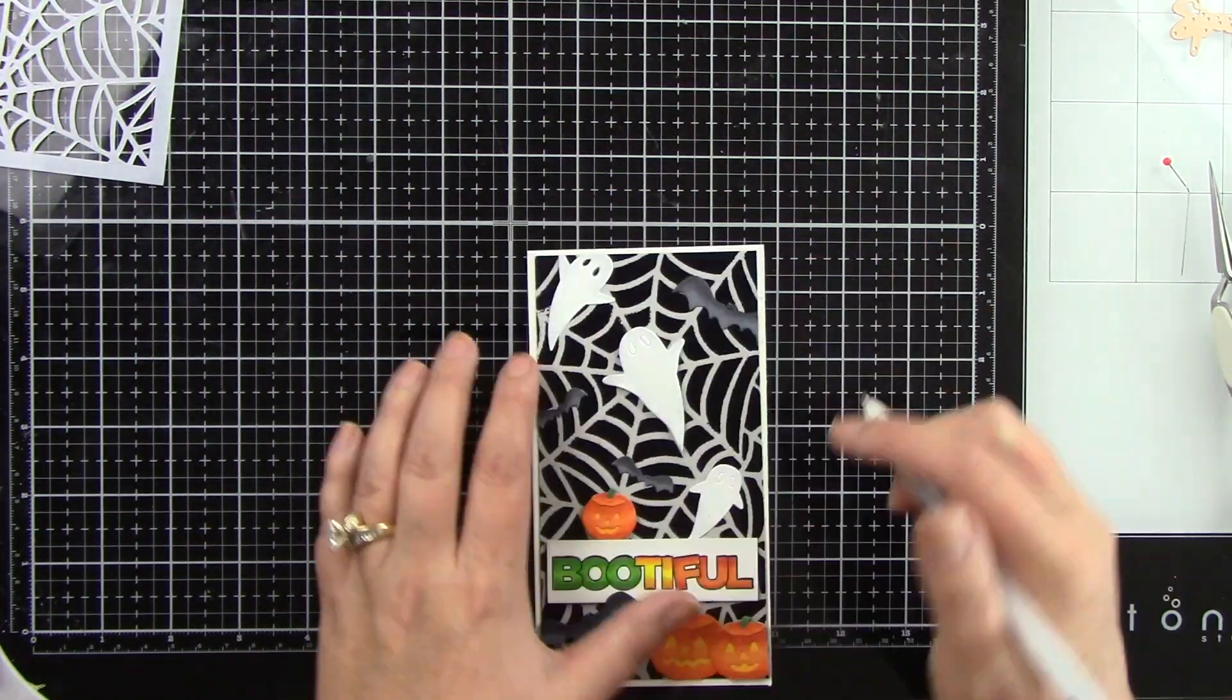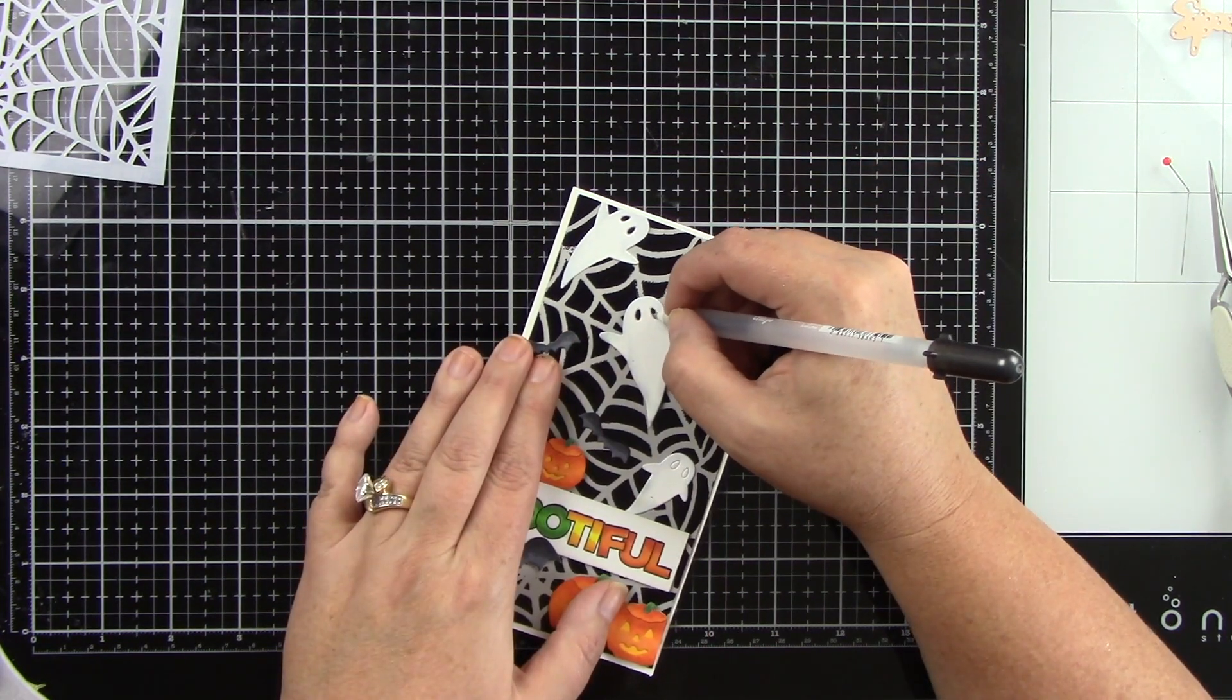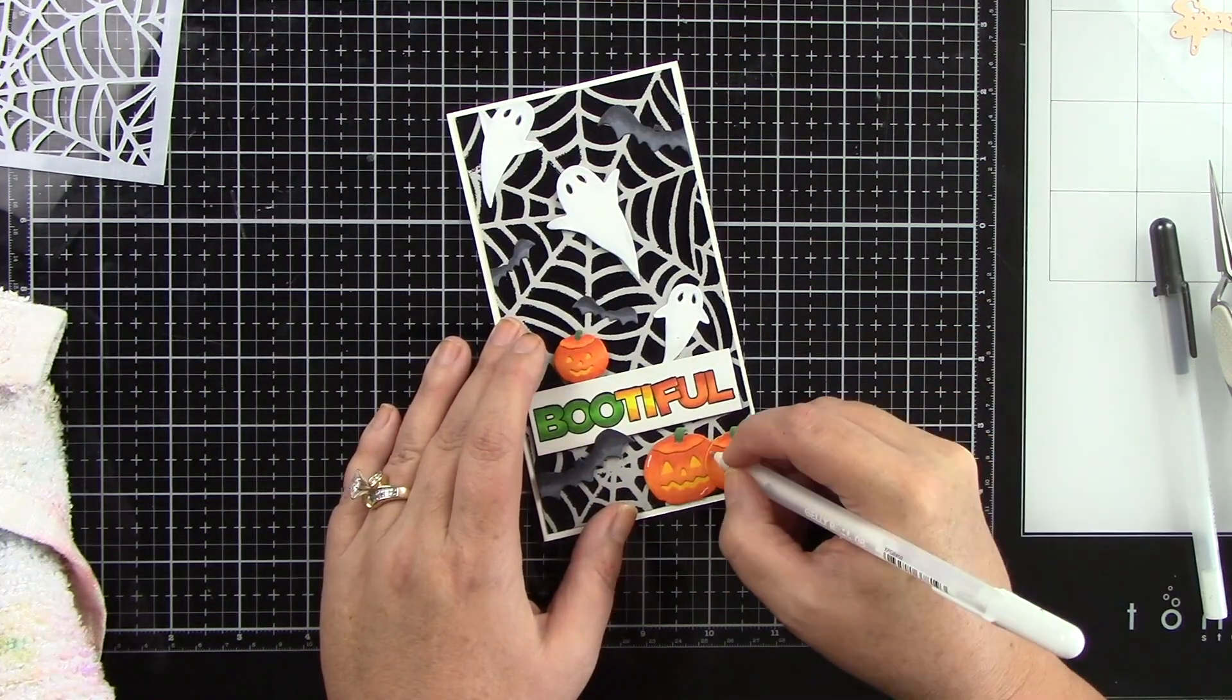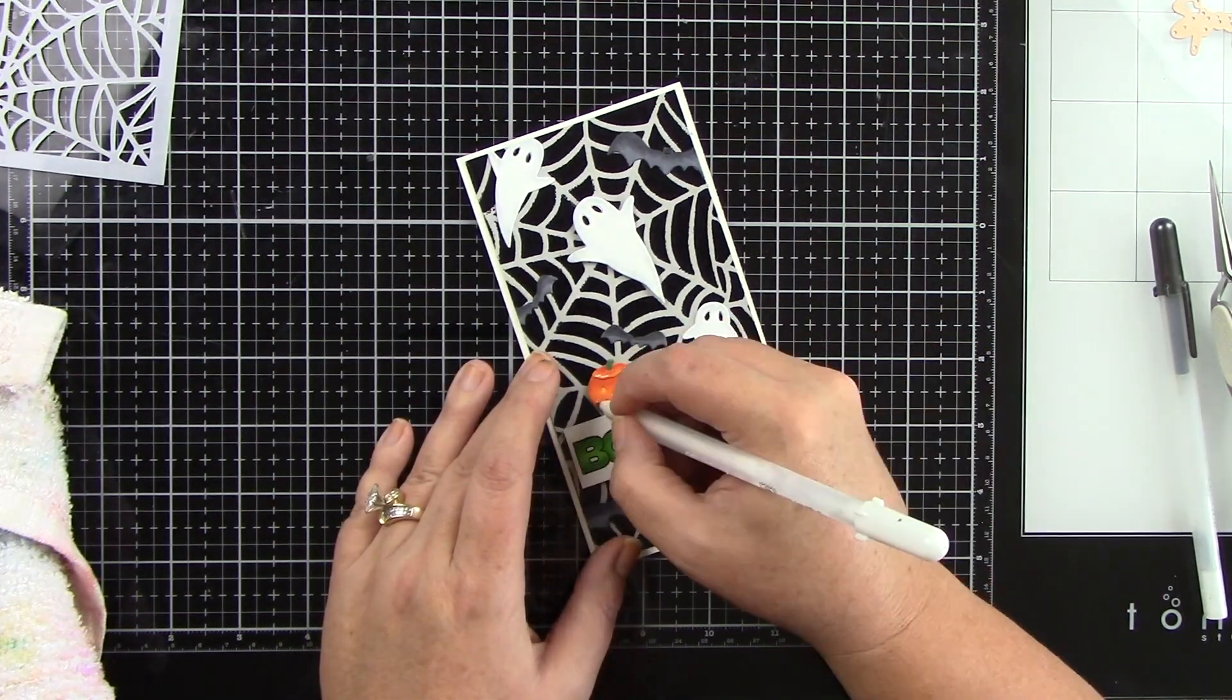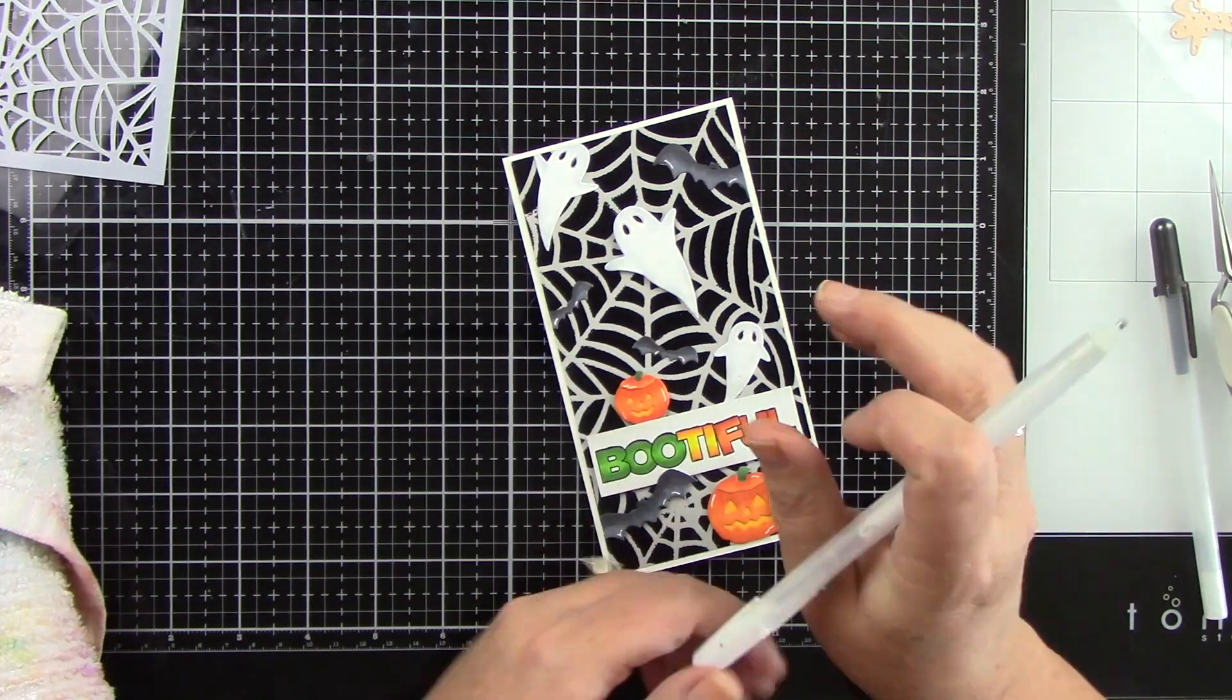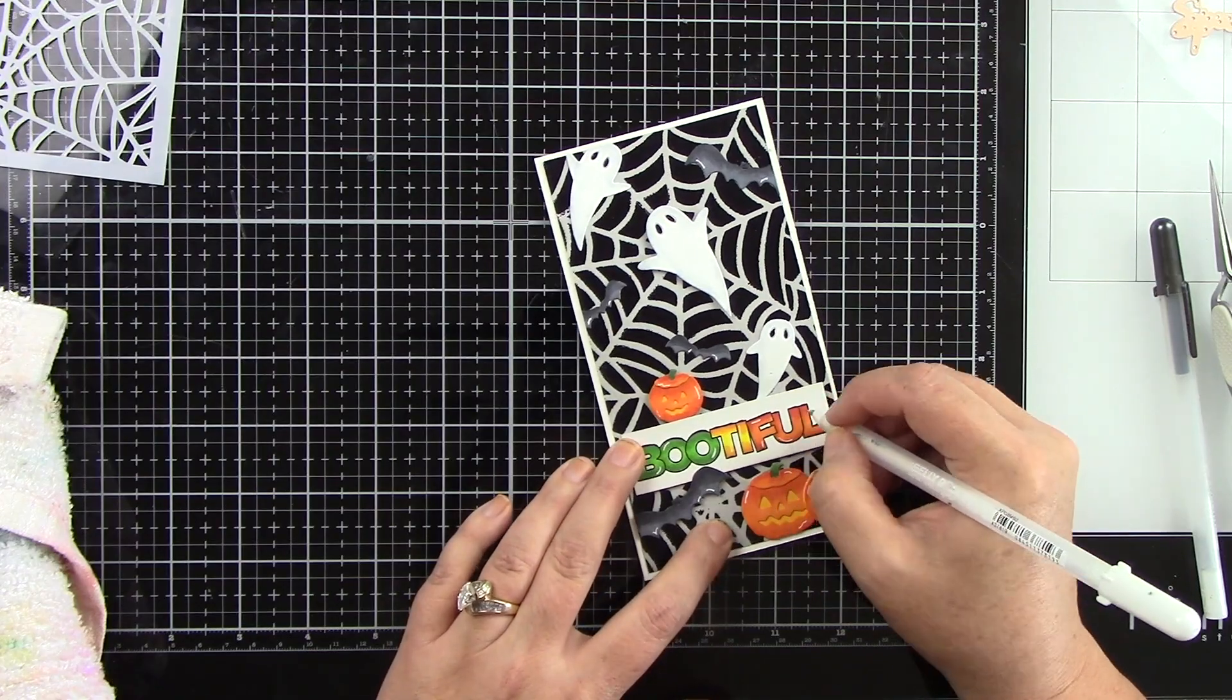So here is the glaze pen for the eyes of the ghosts, and then of course I'm going to come in with my white gel pen, because if you follow me, you know that that is what I like to use, and I'm going to add highlights. I want to also say if you guys like my videos, please subscribe to my channel, like and comment. That is so very helpful, and absolutely share with your crafty friends. I really appreciate that.